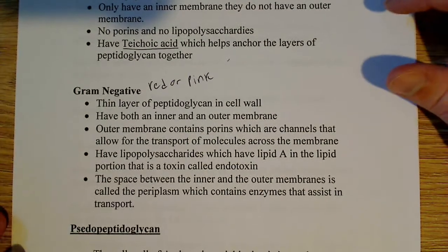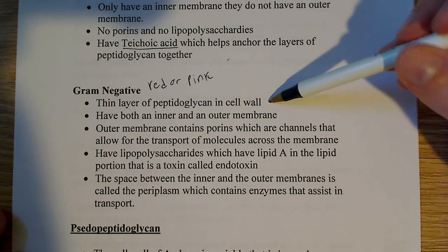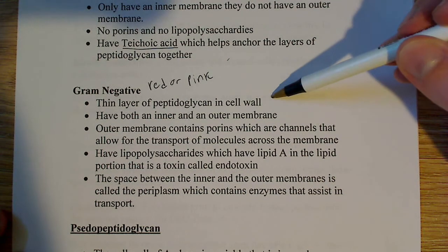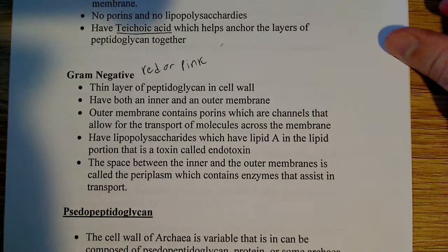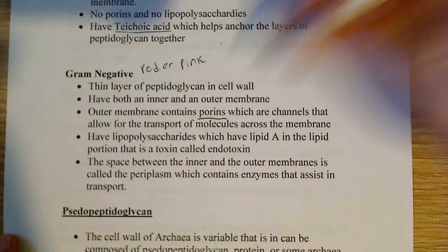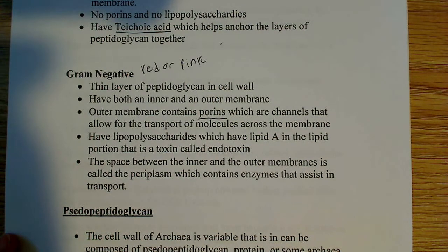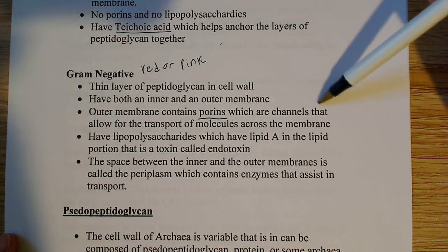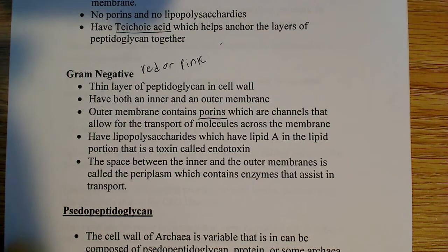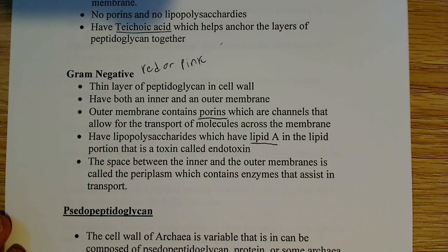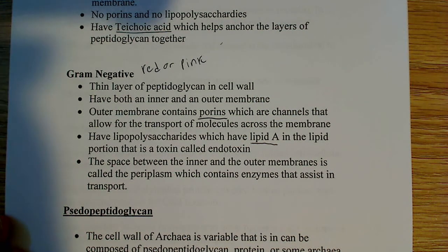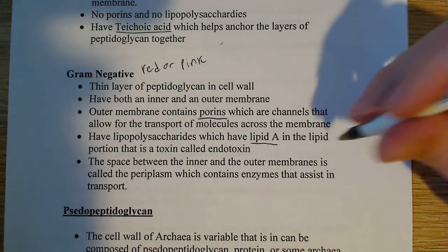Gram-negative bacteria, which stain pink or red, have a thin layer of peptidoglycan cell wall and both an inner and outer membrane. The outer membrane contains porins — channels for molecular transport — and lipopolysaccharides. Lipopolysaccharides contain lipid A in the lipid portion, which is a toxin known as endotoxin, and that is what causes toxic shock when infected by a gram-negative bacteria.